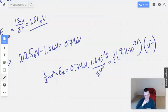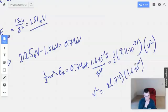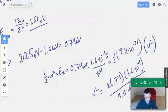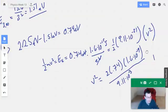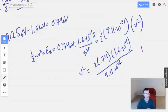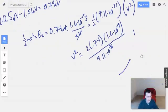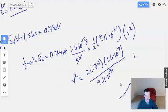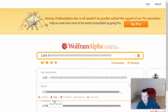Alright, so the only thing here I don't know is v squared. So v squared is 2 times 0.74 times 1.6 times 10 to the negative 19th divided by 9.11 times 10 to the negative 31st. And it'll be square root of that to find the velocity. That seems reasonable. Let's do this.